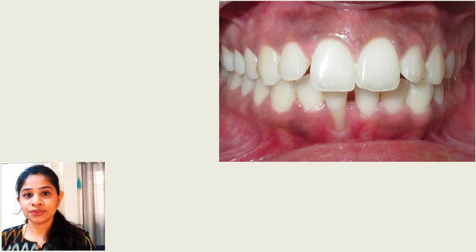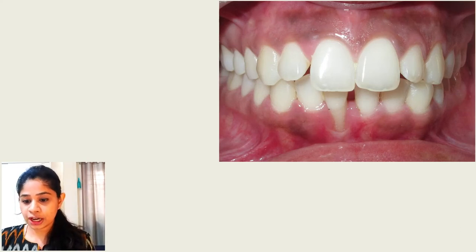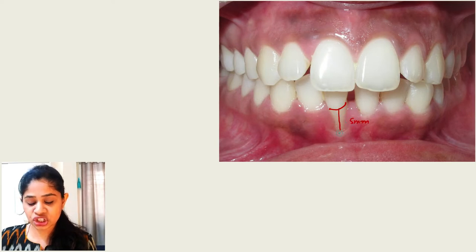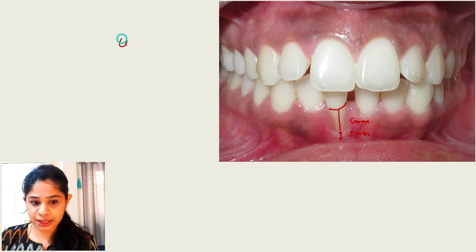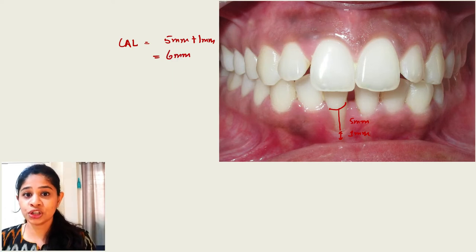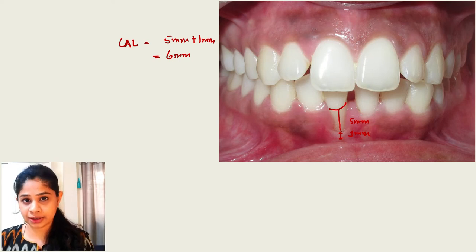Let's see one more example. What if there is recession? Here the CEJ is visible and the distance between the CEJ to the gingival margin is 5 mm, and from the gingival margin to the base of the pocket is 1 mm. So the clinical attachment loss is 5 mm plus 1 mm, which is 6 mm. Remember, in case of recession, you add it; whereas in a normal situation, you subtract it.